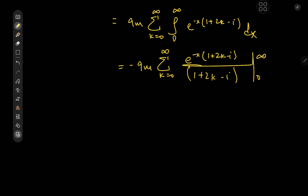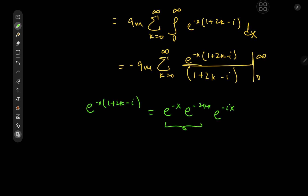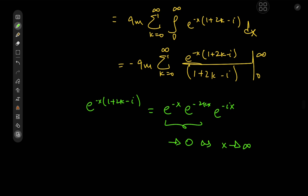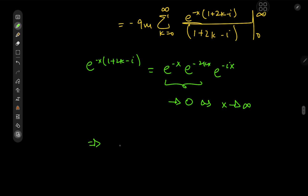For the limit as x approaches infinity: e^{-(1+2k-i)x} expands as e^{-x} times e^{-2kx} times e^{ix}. Since e^{ix} has modulus 1 and the other two terms decay to zero, the upper limit vanishes. We are left with the lower limit only, and the two negative signs cancel, giving I equals the imaginary part of the sum over k from zero to infinity of 1/(1 + 2k minus i).